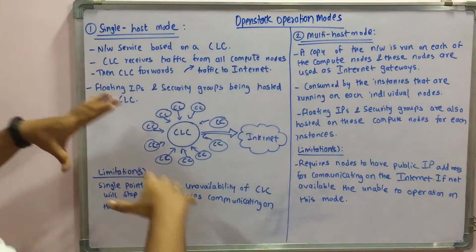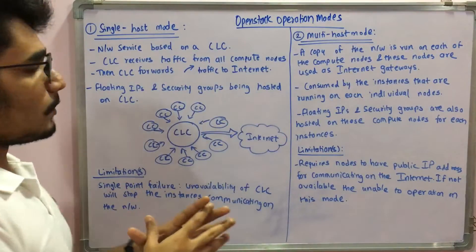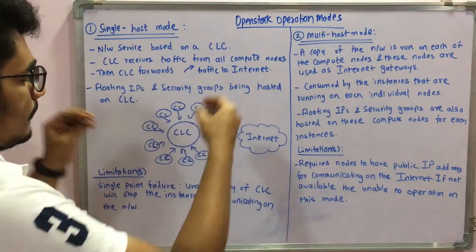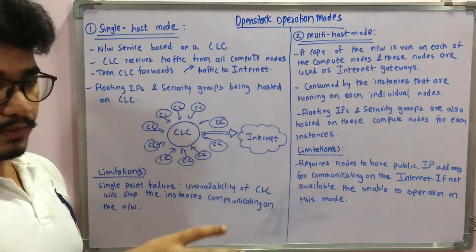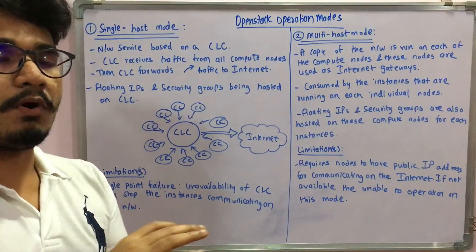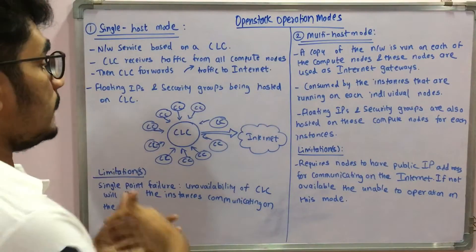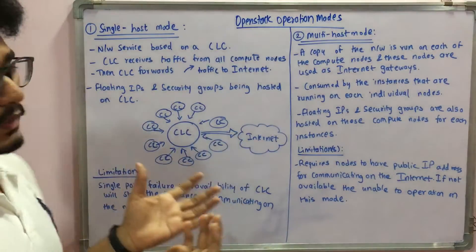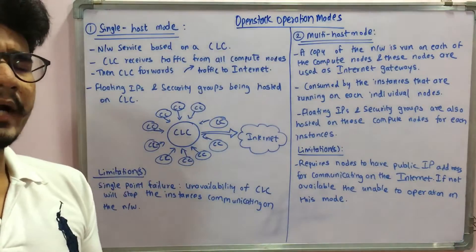In the diagrammatic representation, you have the CLC at the center with multiple compute nodes around it. Each compute node individually submits its traffic to the CLC, and once all compute nodes have finished their work, the traffic is forwarded to the internet for hosting.